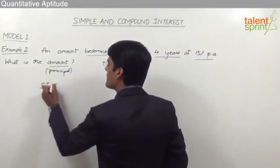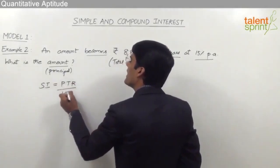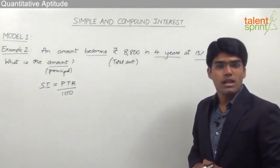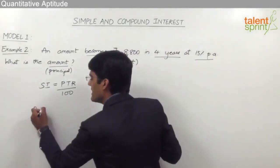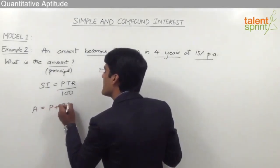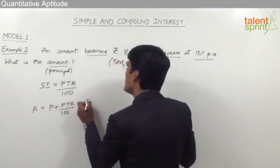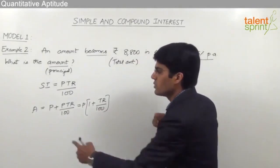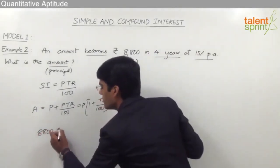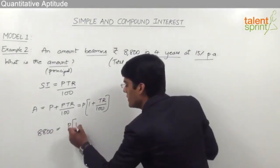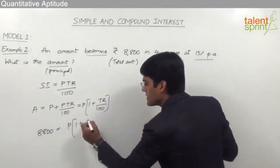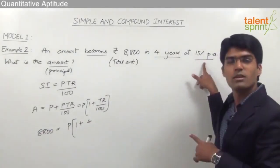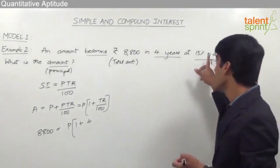So we use SI = PTR / 100. The total amount in case of SI equals P + PTR/100, which equals P(1 + TR/100). Substituting: 8,800 = P × (1 + (4 × 15)/100). The time period is 4 years and rate is 15% per annum, both already in proper format.